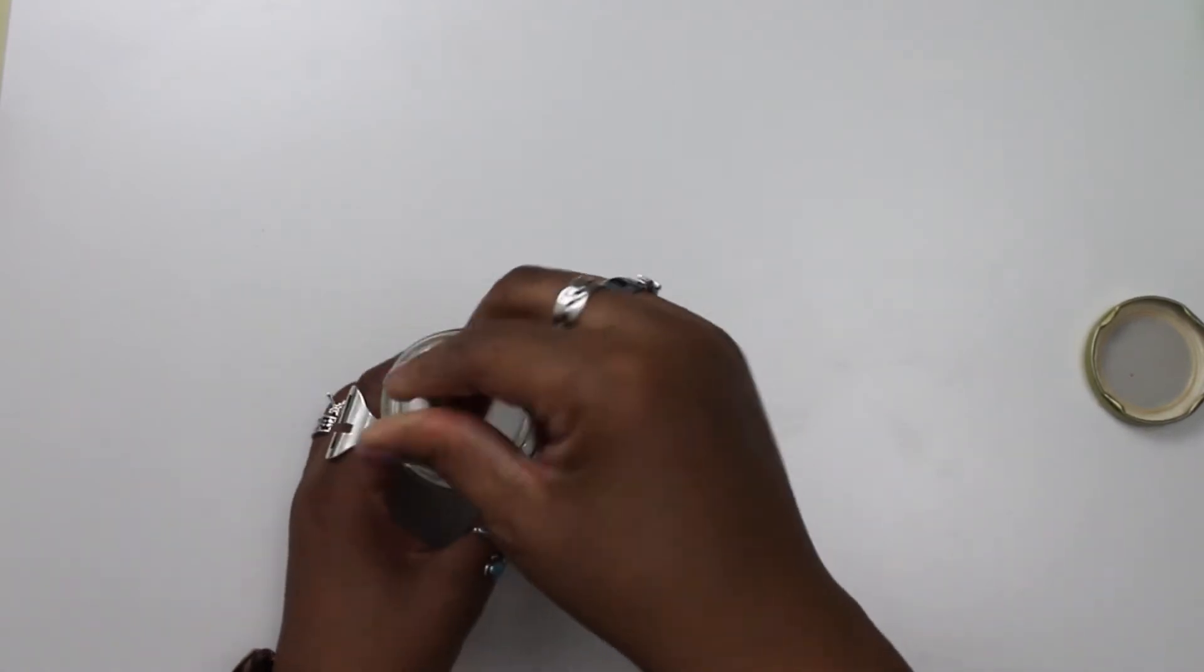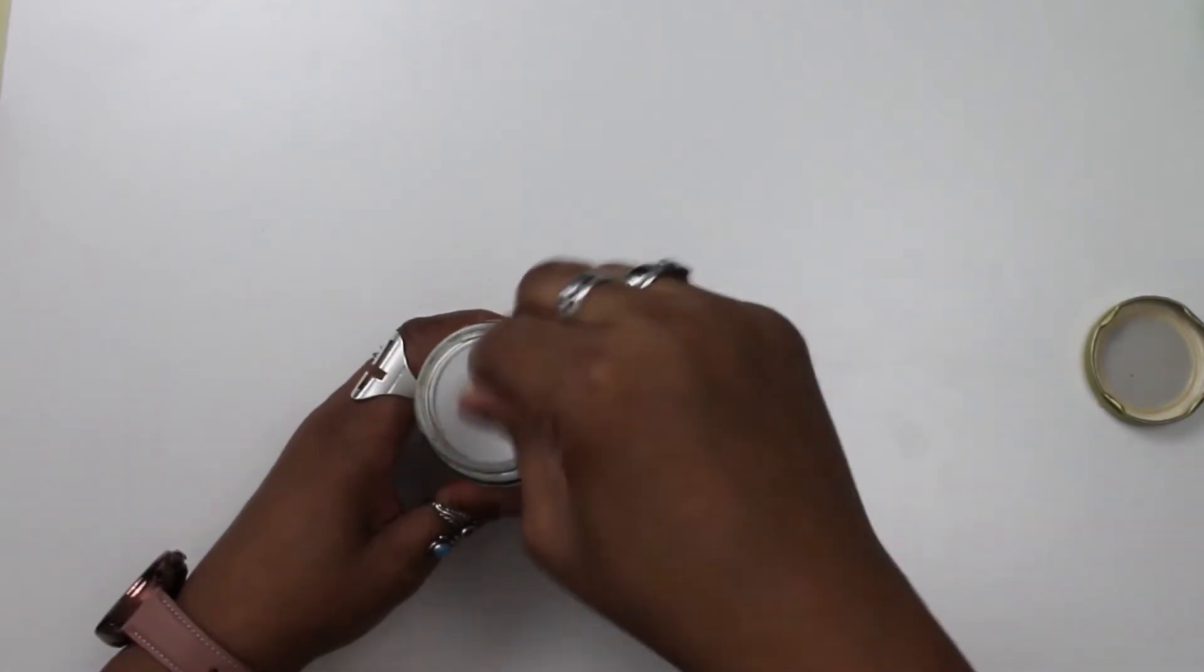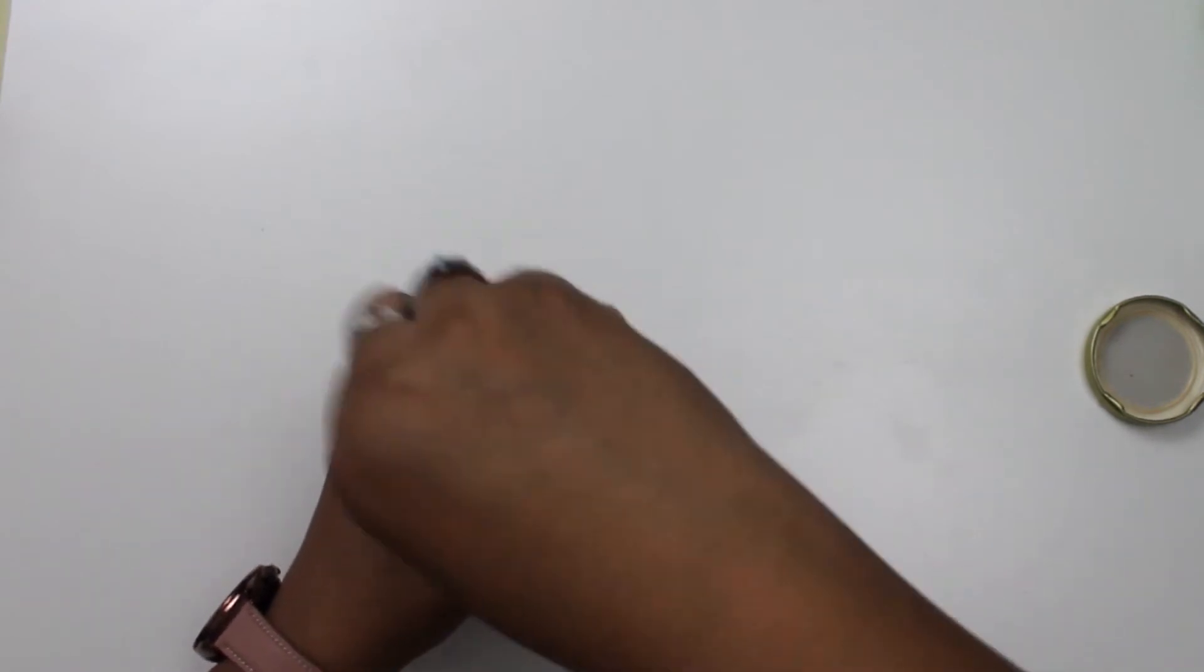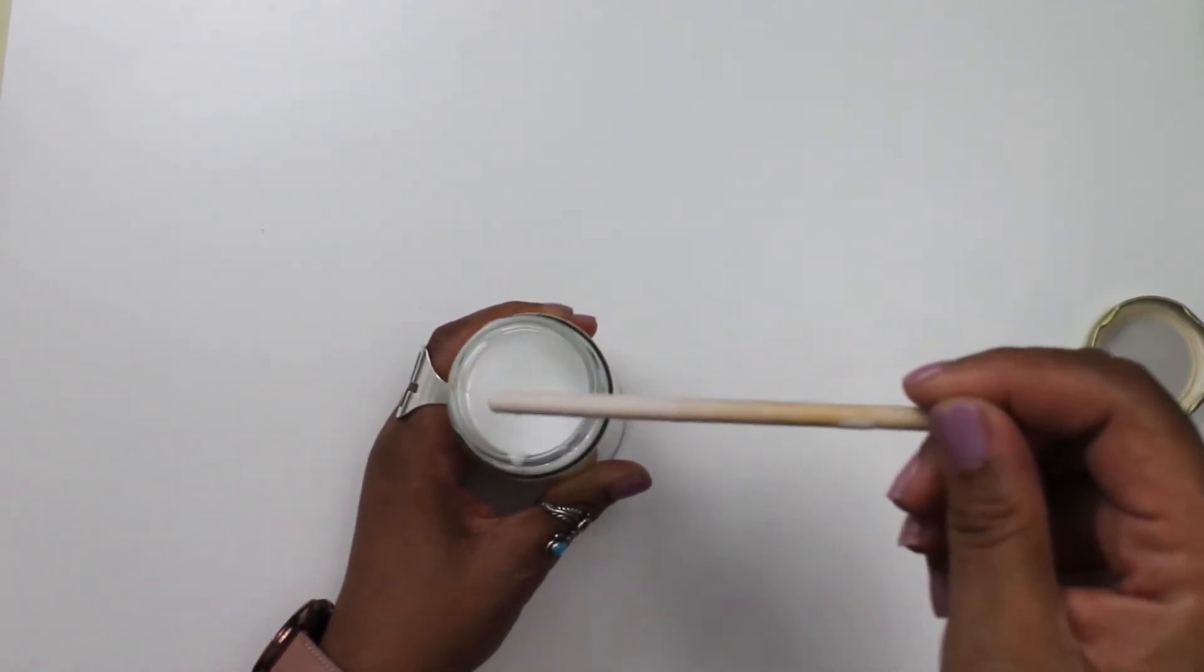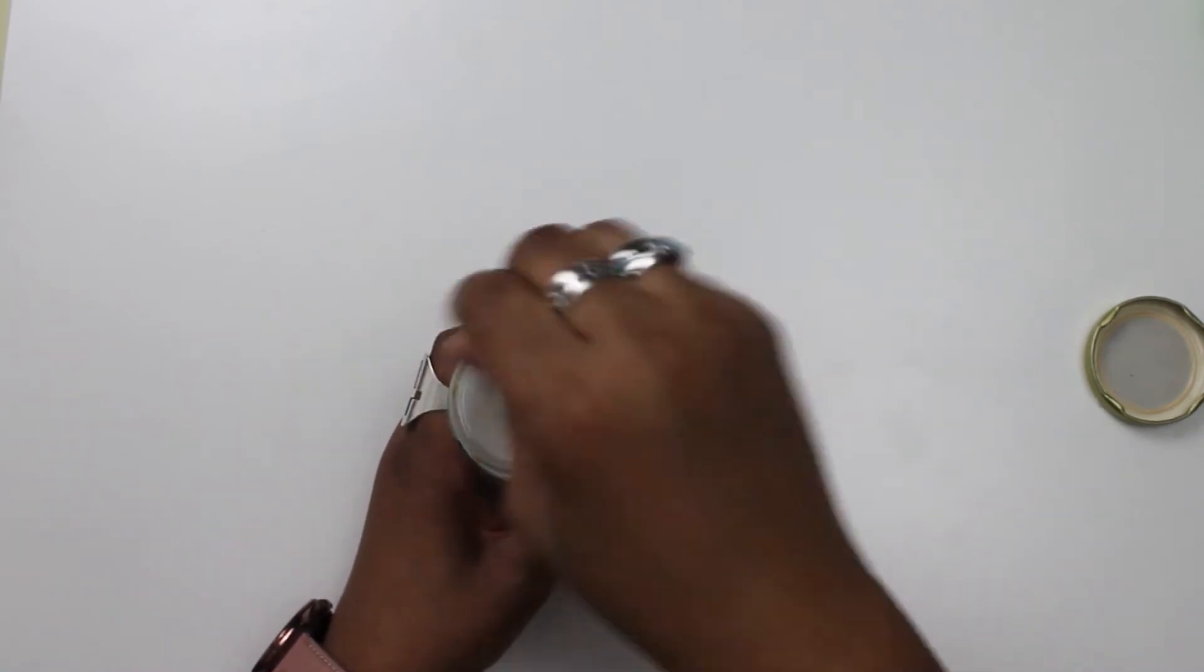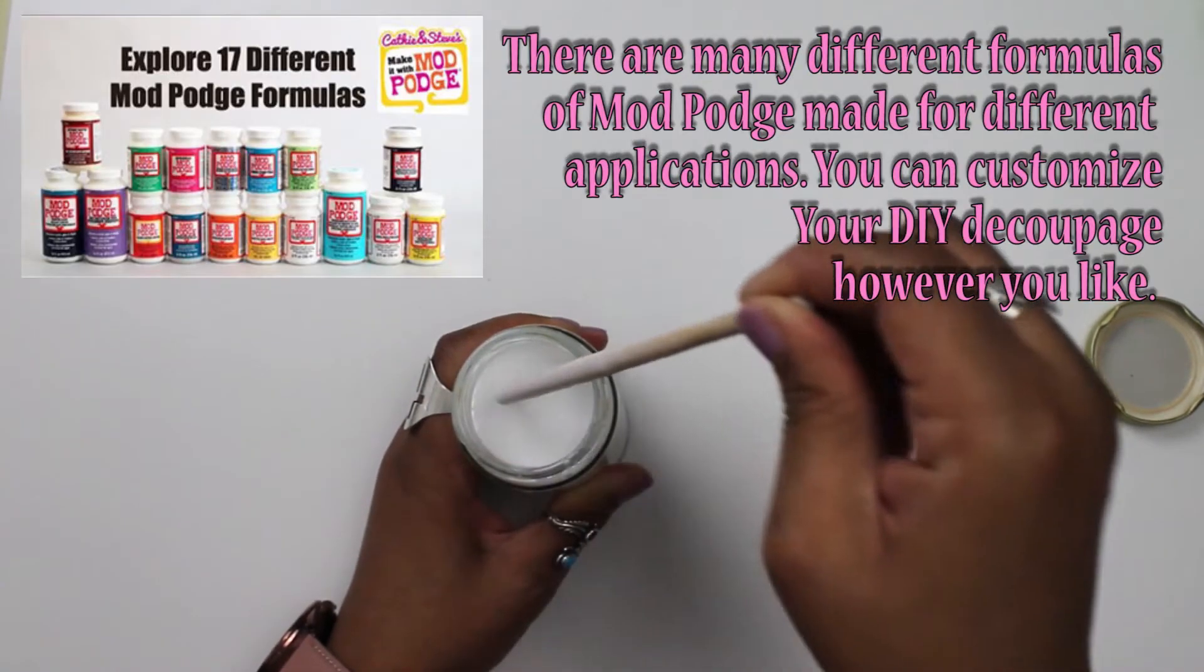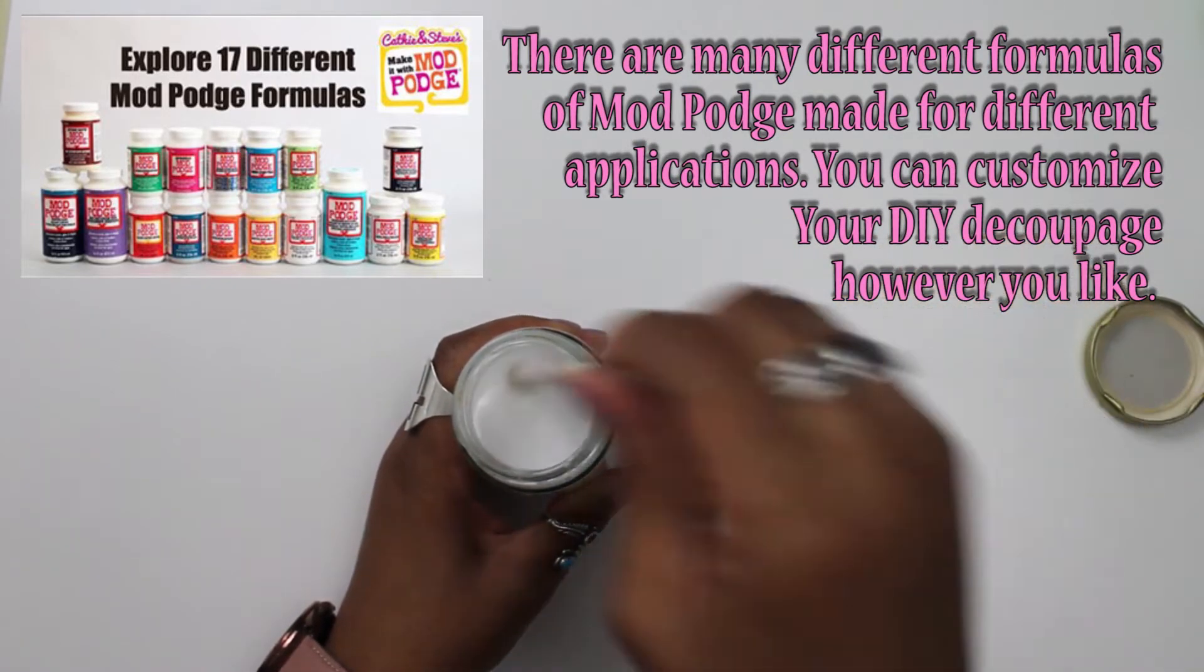So basically what I do is about two parts glue to one part water and then just stir it up. You could also do like a one-to-one combination if you want, but I've found that this is kind of more the consistency I'm going for. I don't like it too runny. You see that?